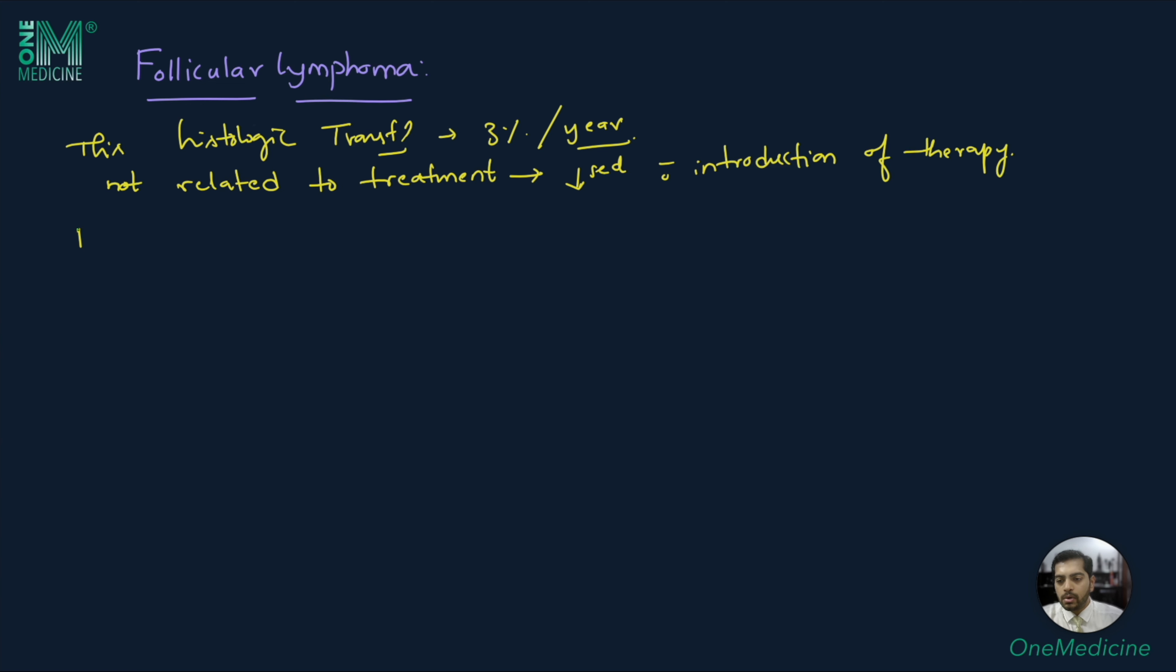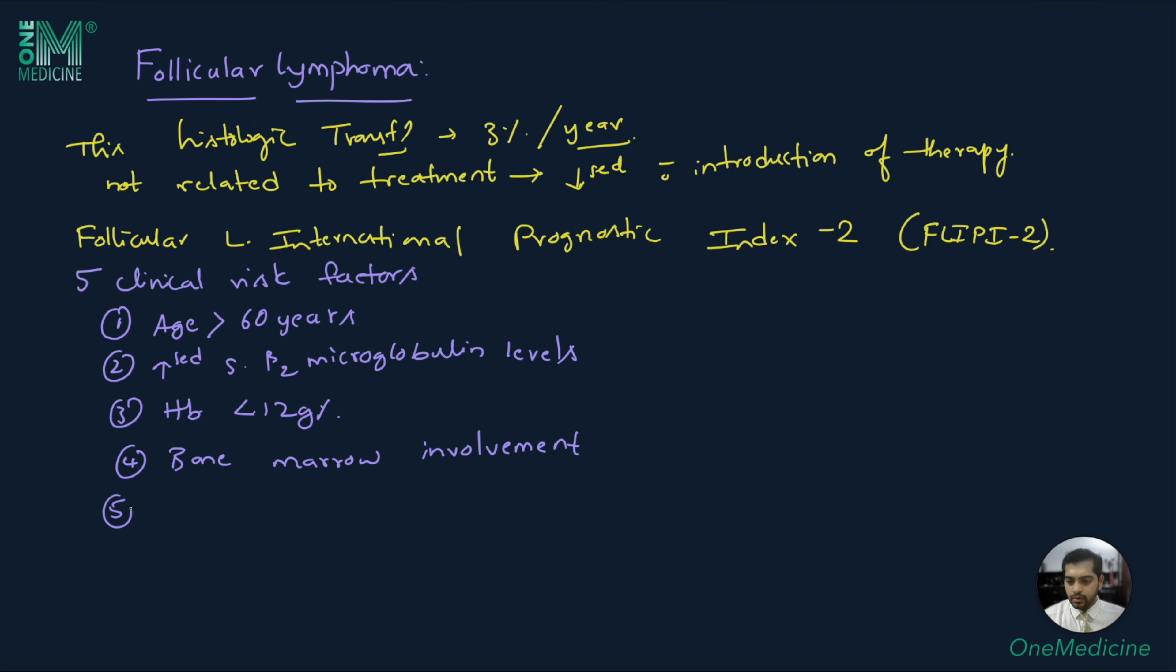There is a prognostic scoring for follicular lymphoma called Follicular Lymphoma International Prognostic Index 2, written as FLIPI-2 in short. This scoring involves five clinical risk factors: age more than 60 years, increased serum beta-2 microglobulin levels, hemoglobin of less than 12 gram percent, bone marrow involvement, and longest diameter of the largest node more than 6 centimeters.